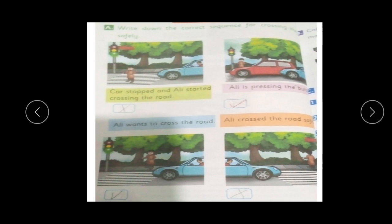Then Ali crosses the road, then Ali crosses the road safely. Ali crossed the road safely, then Ali has crossed the road. So you have to see how this chart is going to be done.